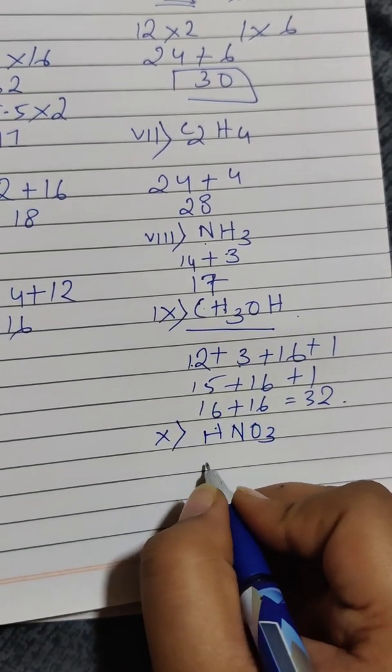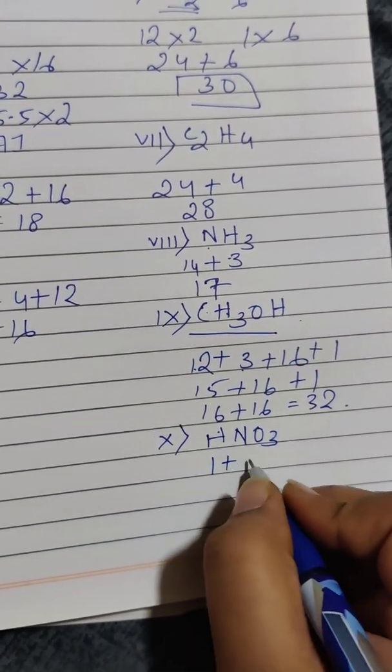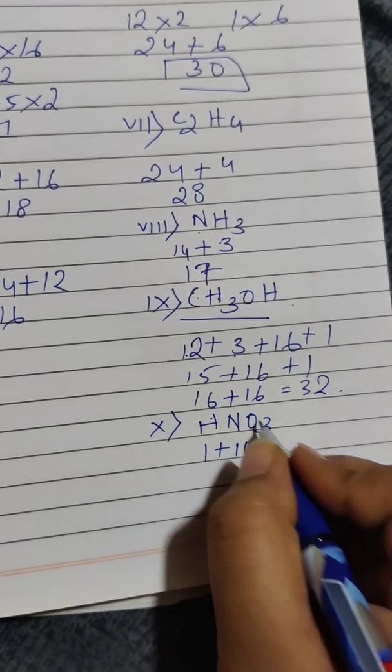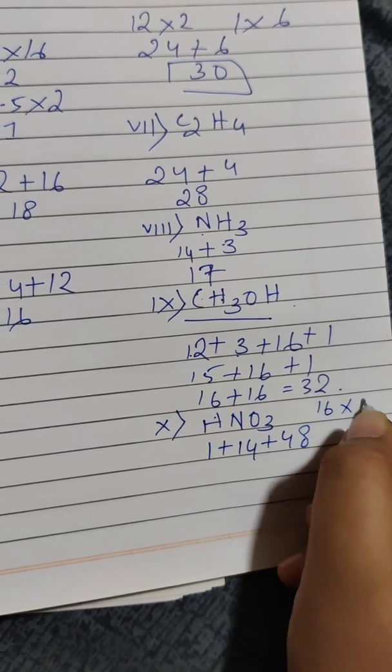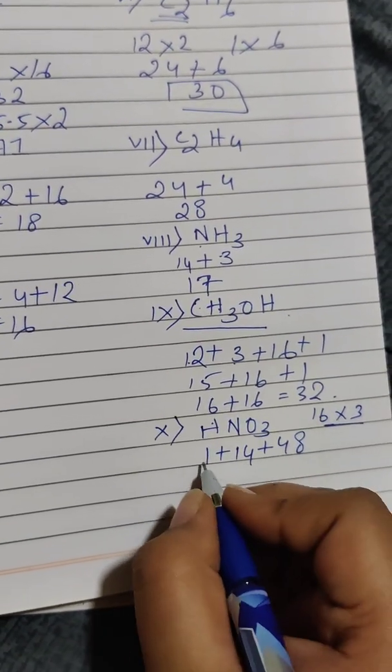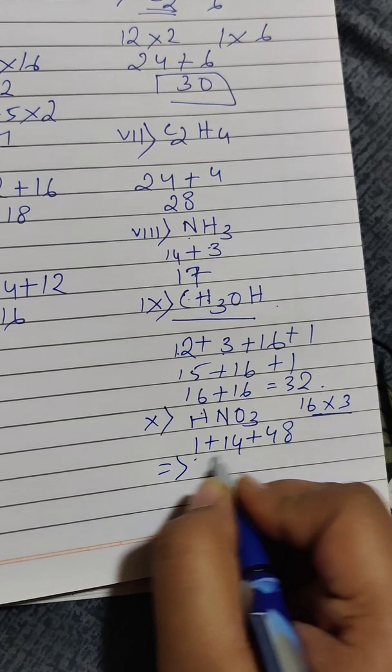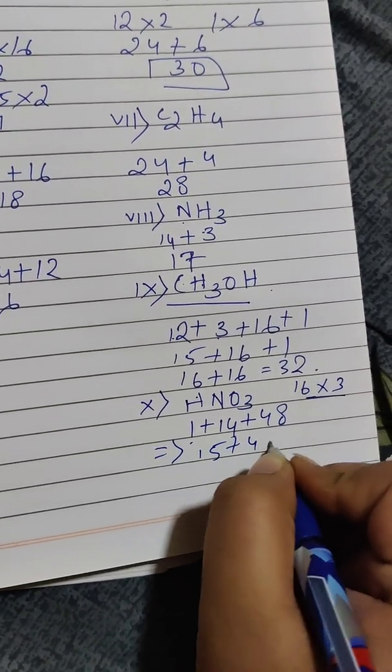HNO3. Hydrogen once, nitrogen once, oxygen thrice. 16 into 3. Fifteen plus 48.